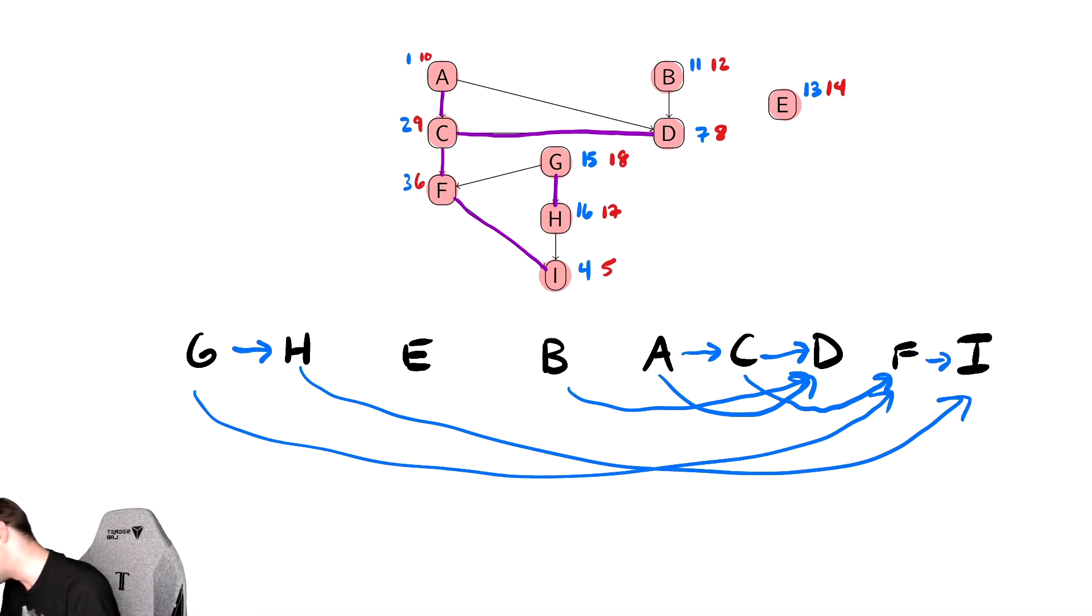Let's verify that we have the correct number of edges. We have 9 edges drawn, and in the original graph, we also have 9 edges. So, we have 9 edges and 9 edges. And if you notice, every edge flows from left to right.